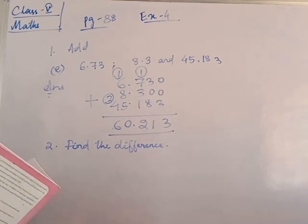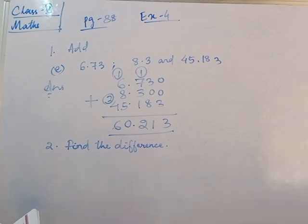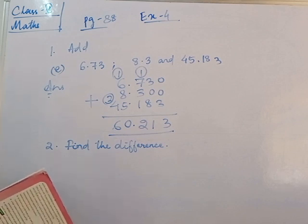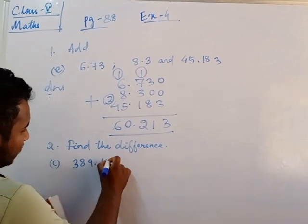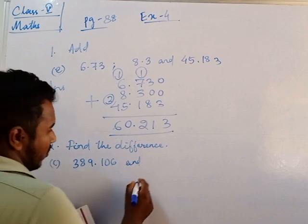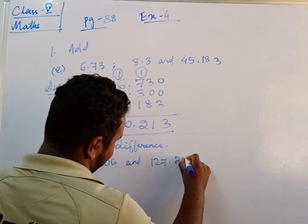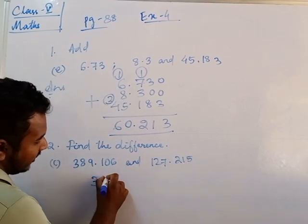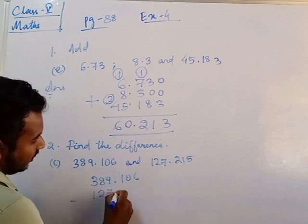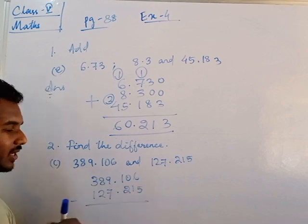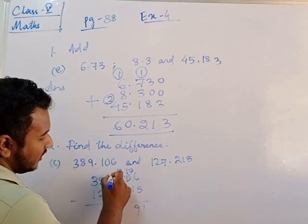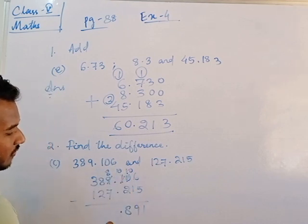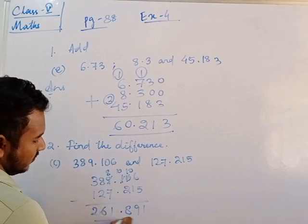Next: find the difference, which means subtraction. See number: 389.106 minus 127.215. Write 389.106 and 127.215. Simple borrowing: this will become 10, minus gives 9; again borrow, this becomes 8. The answer after subtraction is 261.891.